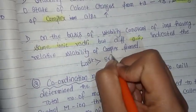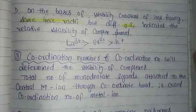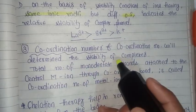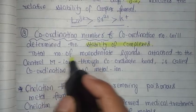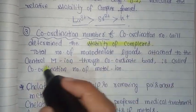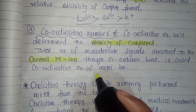Third is coordination number. Coordination number will determine the stability of complex. Coordination number is the total number of monodentate ligands attached to the central metal ion through coordinate bonds. This is called coordination number of metal.